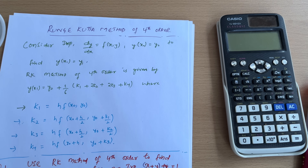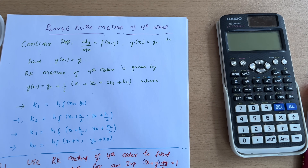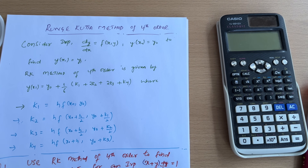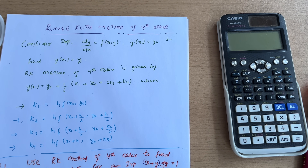Hello everyone and welcome back to my channel. Hope you are all doing well. So dear students, so far we have discussed the Taylor series method and modified Euler's method. Now in this video I will be discussing the Runge-Kutta method of fourth order. It is far more accurate than Euler's method and the Runge-Kutta method of second order. So let's see the procedure.